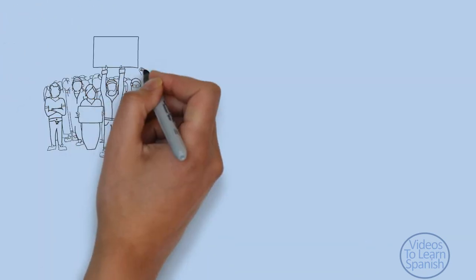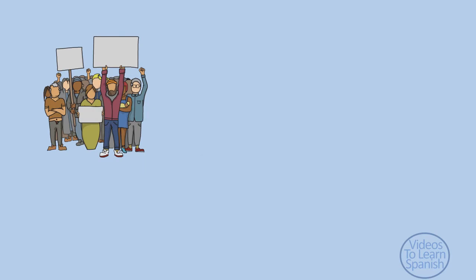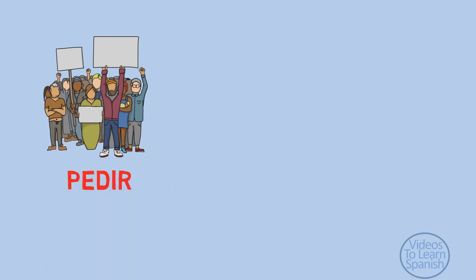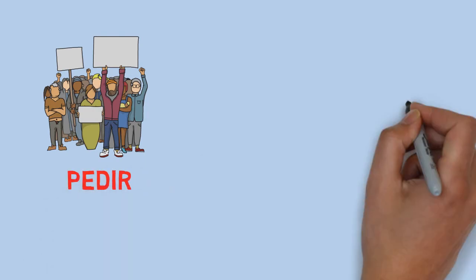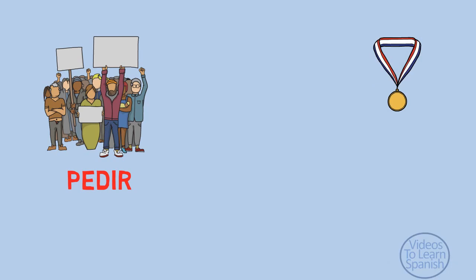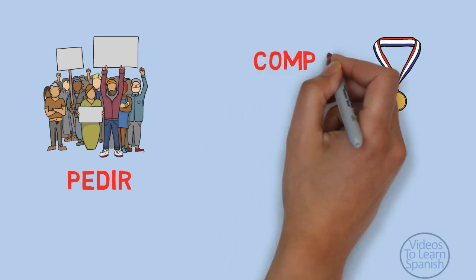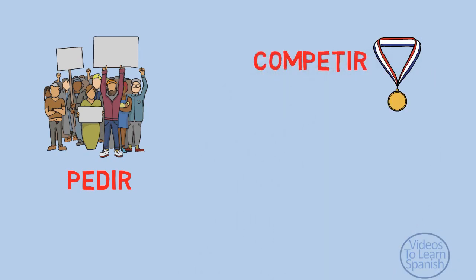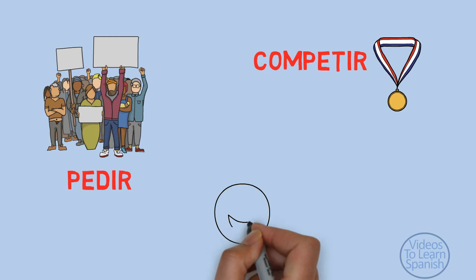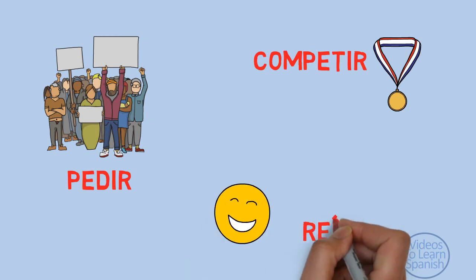There is one more type of vowel change in the present tense: when the E in the stem becomes I. It only applies to verbs ending in -IR, like pedir, competir, or reír.